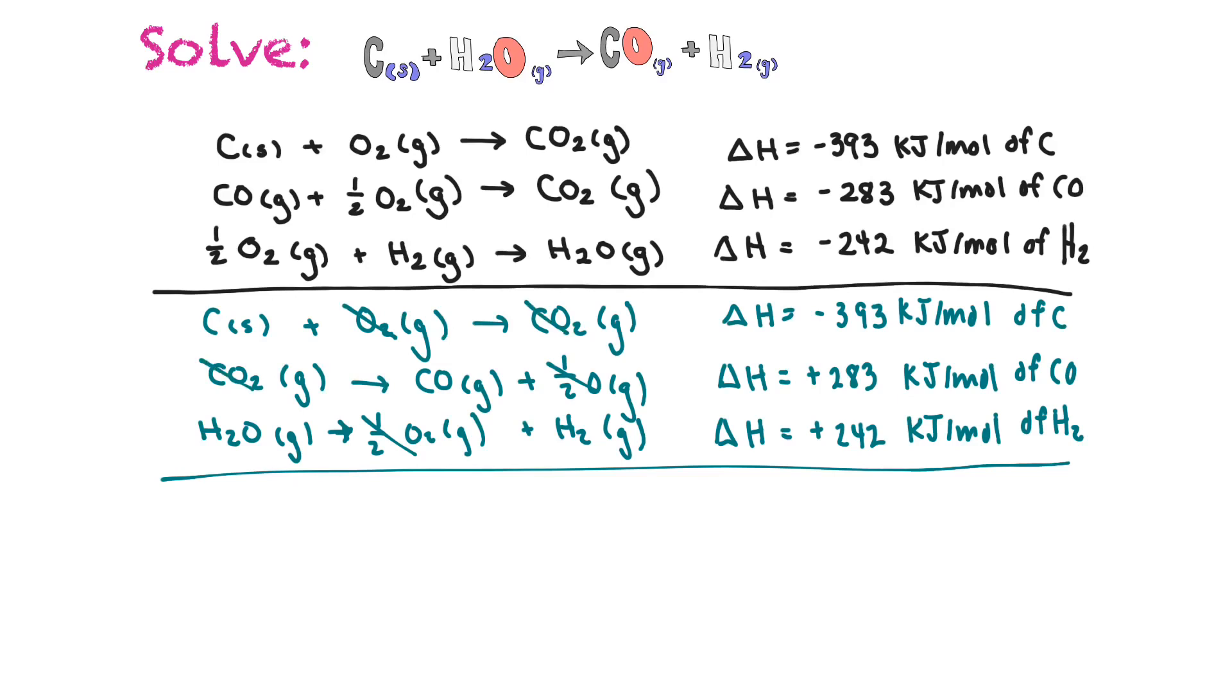And now we can rewrite our equation. So we have carbon solid plus H2O gaseous makes carbon monoxide gaseous plus H2 gaseous. And then our delta H is equal to, add them all together, and you get a positive 132 kilojoules per mole of carbon monoxide. And that's how you solve.